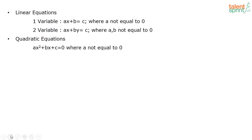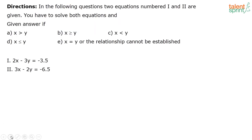You should know both the methods and choose appropriately. Let's look at the first question. There are two equations — equation 1 and equation 2 — and you have to solve both, find the variables, and say which variable is greater or lesser or what is the relationship between the two variables. Here is the first question: 2x − 3y = −3.5 and 3x − 2y = −6.5.